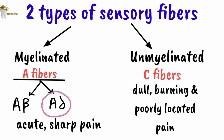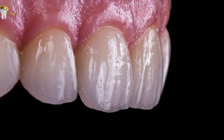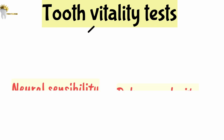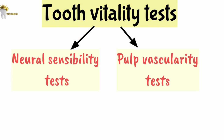The most widely used pulp vitality testers assess the integrity of the A-delta fibers. When a stimulus is applied to the outer surface of the tooth, if A-delta fibers are stimulated, the patient will report a short sharp sensation — indicating that A-delta nerve fibers are functioning. There are two types of tooth vitality tests: neural sensibility tests and pulp vascularity tests.